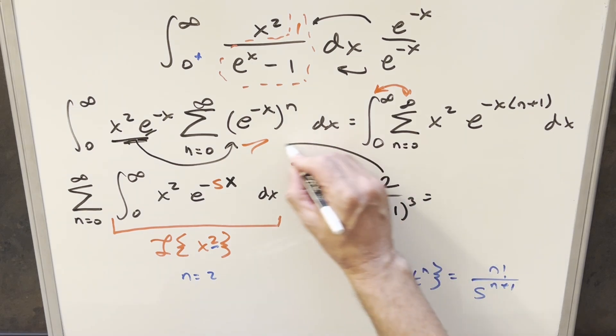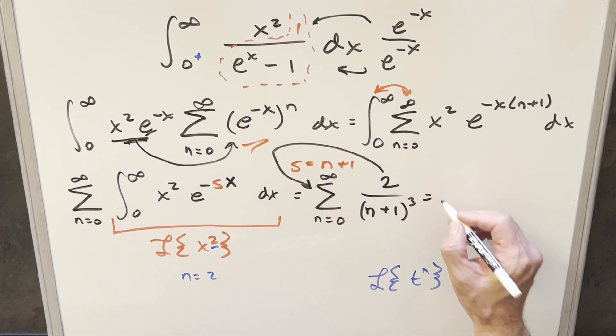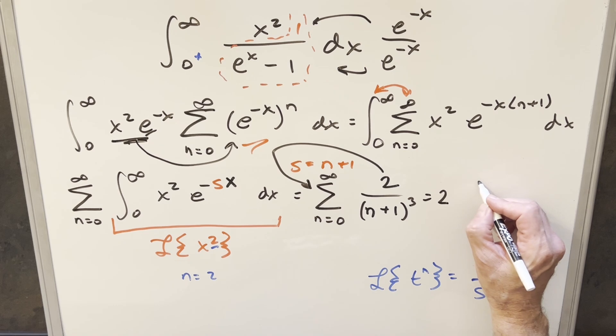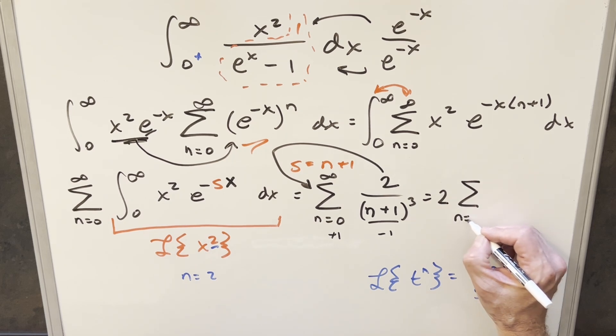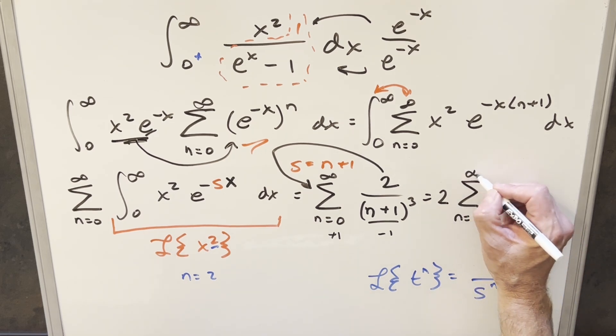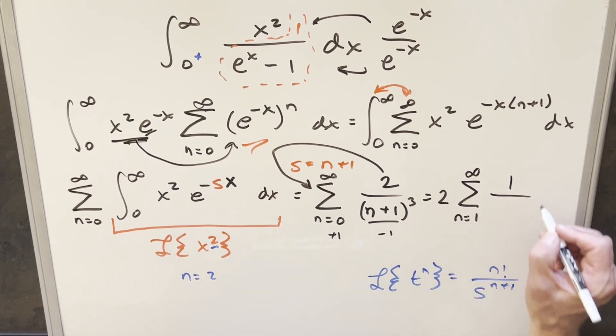Let's take this 2 and bring it out front. That's just a constant. So we'll have the 2 out front on the sum. And then on the sum, let's just do an index change, because I don't like having an n plus 1 here. If I get to get this back to n, I can just subtract 1 here. And all I need to do is add 1 on the index. So what's going to happen is now we're going from n equals 1 to infinity. And this is all going to become just 1 over n cubed.